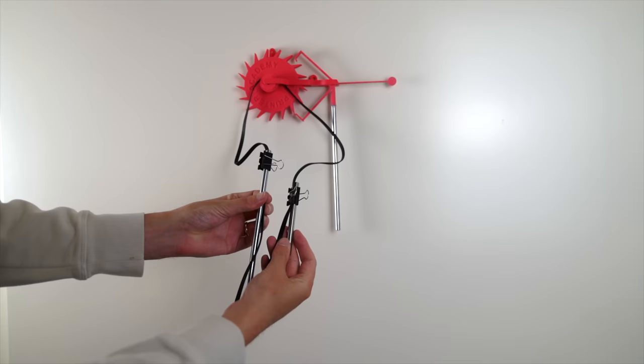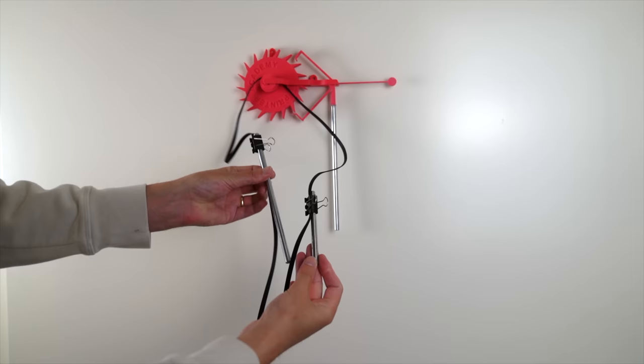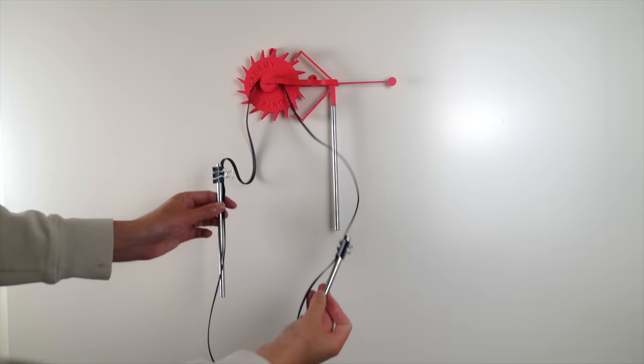You may have noticed that there are two counterweights connected to the belt. One weight is heavier than the other weight. This allows for extra friction between the belt and the wheel when the heavier weight is falling. This belt system is very similar to how a grandfather clock works, and it makes resetting the clock extremely easy.